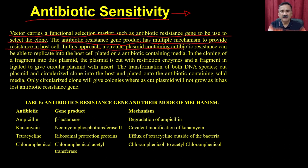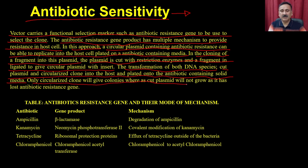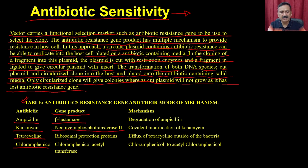In this approach a circular plasmid containing an antibiotic resistance gene can replicate in the host cell, plated onto antibiotic-containing media. In cloning a fragment into the plasmid, the plasmid is cut with a restriction enzyme and a fragment is ligated to give a circular plasmid with insert. The transformation of both DNA species — cut plasmid and circularized clone — into the host and plated onto antibiotic-containing solid media: only the circularized clone will give colonies, whereas the cut plasmid will not grow as it has lost the antibiotic resistance gene. The antibiotics include ampicillin, kanamycin, tetracycline, and chloramphenicol, with corresponding gene products beta-lactamase, neomycin phosphoryltransferase, ribosomal protection proteins, and chloramphenicol acetyltransferase.